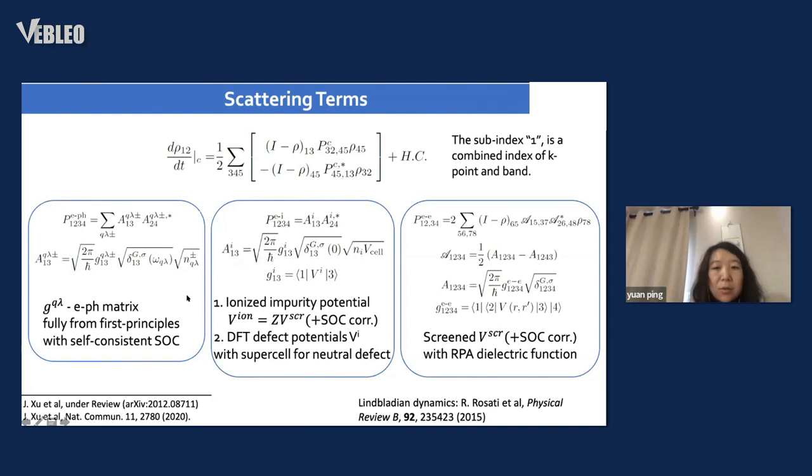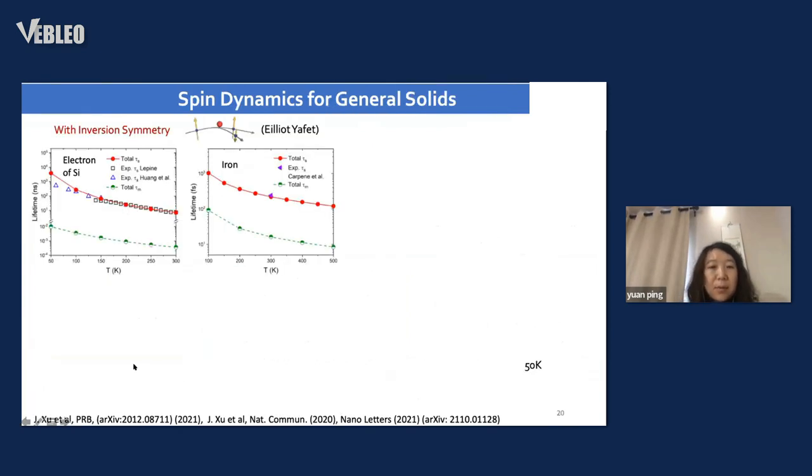The calculation requires several steps. We build our tool on top of existing software like GPAW or Quantum Espresso, where we get DFT states, phonons, and electron-phonon matrix elements with self-consistent spin-orbit. We compute that at a coarse mesh, then do Wannier interpolation to high k and q mesh. The explicit part is computing the dynamics, where we compute the scattering matrix first, then the time evolution of the density matrix.